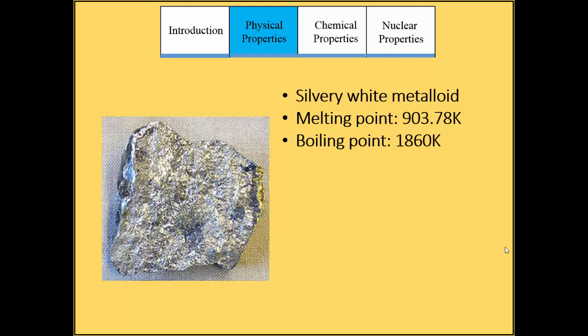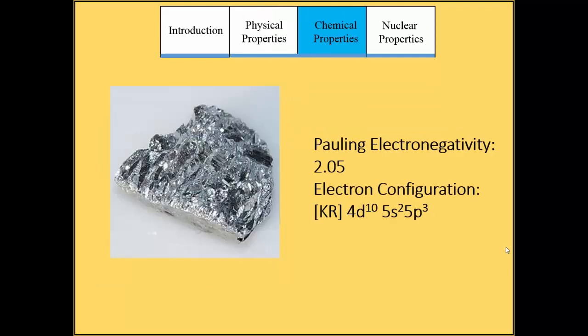The melting point is 93.78 Kelvin and the boiling point is 1860 Kelvin. The electronegativity is 2.05, and the electron configuration is krypton-4d10-5S2-5P3.